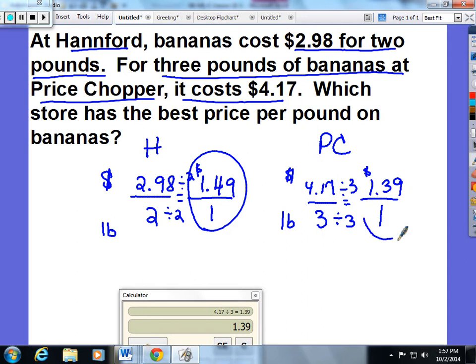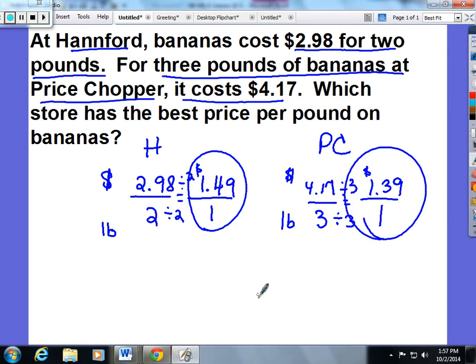So if I were looking to save some money, I would shop at Price Chopper, because Price Chopper is $0.10 cheaper per pound of banana.